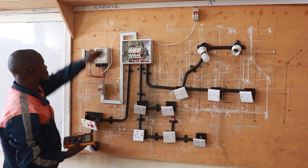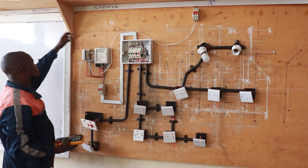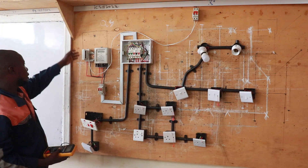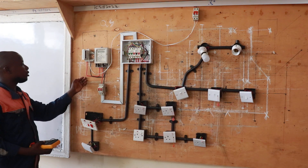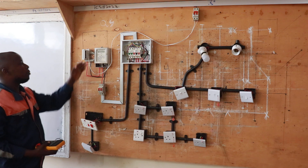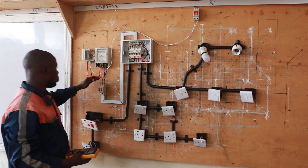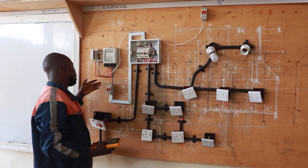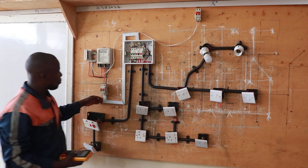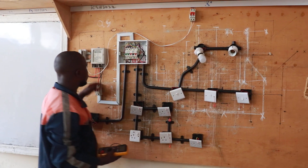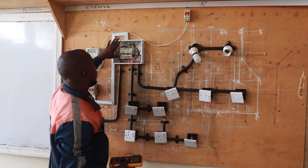From the hammered cable, I profit my cut-out. From the cut-out, I'm using a cable of 6.0 to the meter. Then from the meter, I'm using a cable of 6.0 to my isolator. Then from the isolator, I'm using a cable of 6.0 to my distribution box.